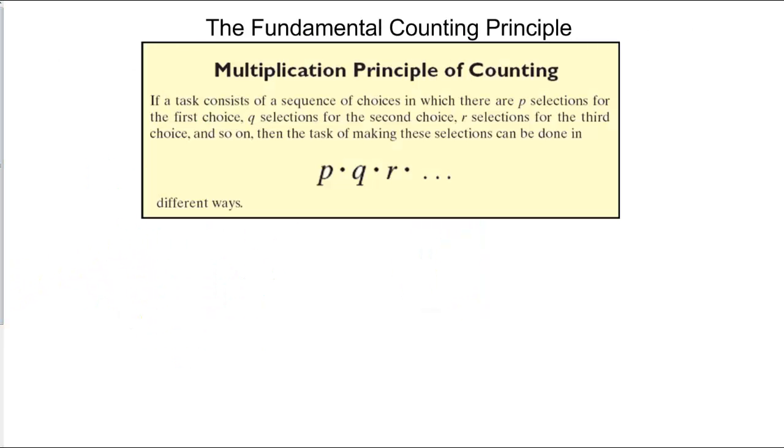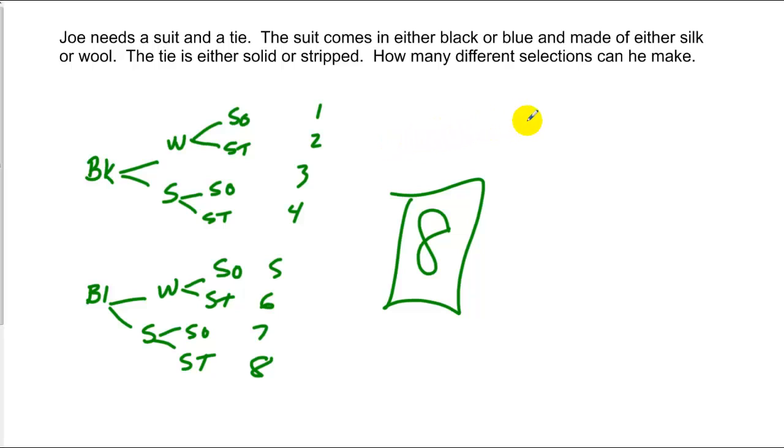Turns out that we use what's called the fundamental counting principle for a problem like this. In other words, if a task consists of a sequence of choices, where you have P of one choice, Q of another, R of another, so on and so forth, you can find the number of different ways to make this combined choice by taking the number of items in P, multiplying it by the number of items in Q, and multiplying it by the number of items in R. If you go back to our last example, we see that we had two choices for color, two choices for material, and two choices for the tie. If we multiply those three together, we get eight.